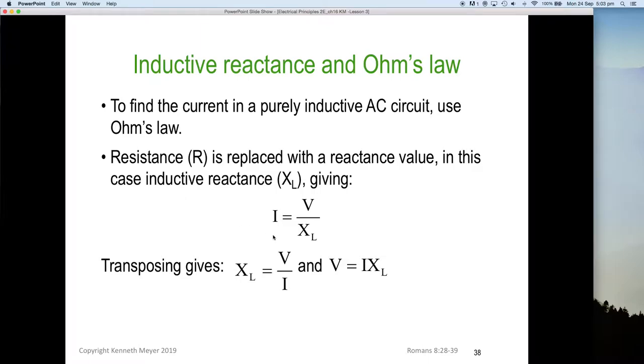We're simply going to say, for example, I equals V divided by XL. So that will give us the current. We can also transpose that Ohm's law equation into its other forms, so we can say XL is equal to V divided by I, and we can also say V equals I times XL, because XL is just basically the AC resistance.